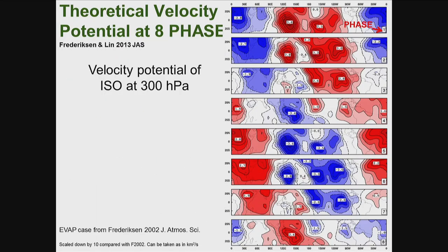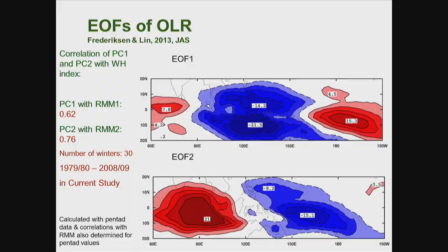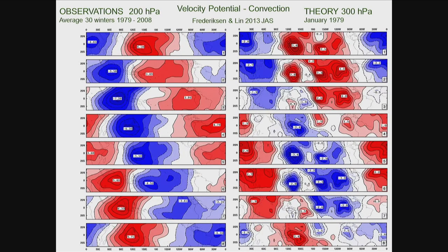This is from observation. Now the same calculation was done for the theory-generated velocity potential for different phases of the cycle. The velocity potential from the theory for the MJO mode also propagates eastward, and putting them together you can find quite a lot of similarities. That means the theory generates a mode in the tropics very similar to the MJO signal.